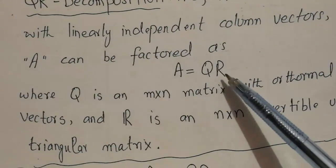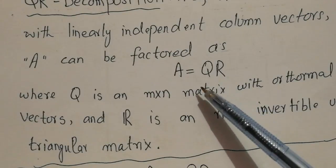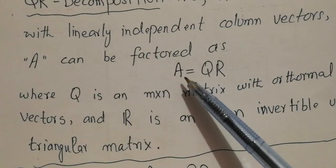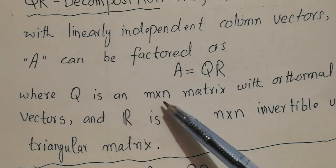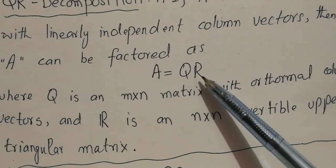The special thing about Q is that all its column vectors are orthonormal, and the order of Q is the same as A, which is m×n. R is an invertible upper triangular matrix.